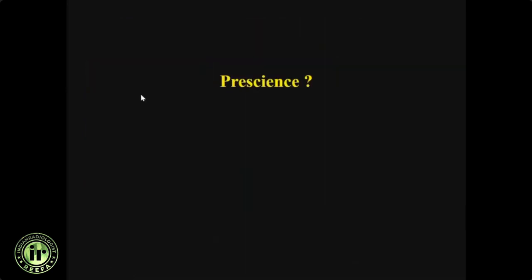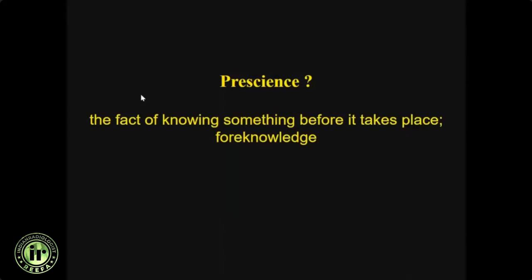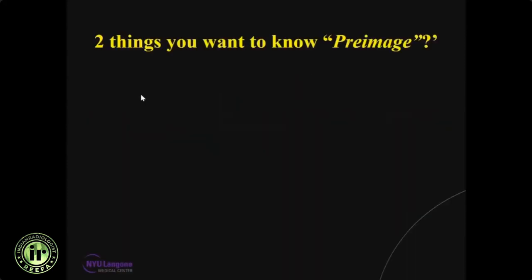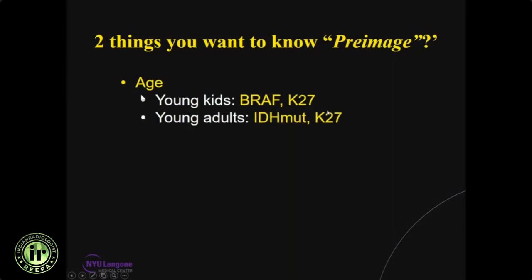Pre-science is the concept of knowing something before it takes place — foreknowledge — and I always believe this is really important for glioma imagers. Two things I always tell trainees to assess before even looking at the image — I call it pre-image — are the age of the patient and the clinical presentation. Age is very important: majority of young kids will have either BRAF or K27 mutant gliomas; young adults will mostly have IDH-mutated gliomas or some K27-mutated diffuse midline gliomas.